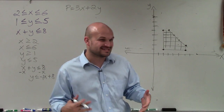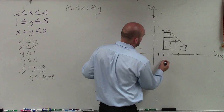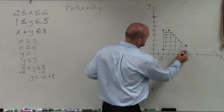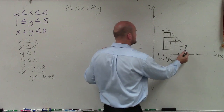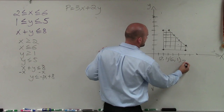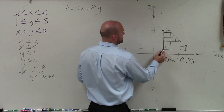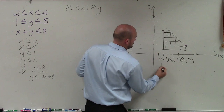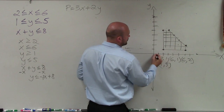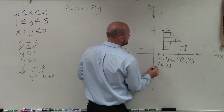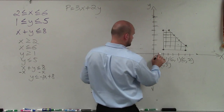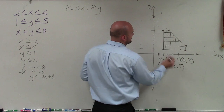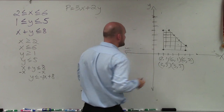I'll simply list all of these points. Going across the feasible region: I have (2, 1), I have (6, 1), I have (6, 2), I have (2, 5), and I have (3, 5). So now I have all five points of the feasible region vertices.